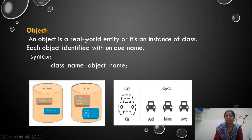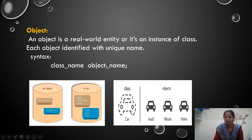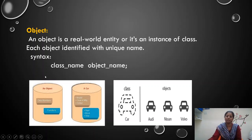Object is a real world entity. Each object holds only one instance. If you want multiple, you create object 1, object 2, object 3, object 4 — n number of objects, as we discussed in the previous class.